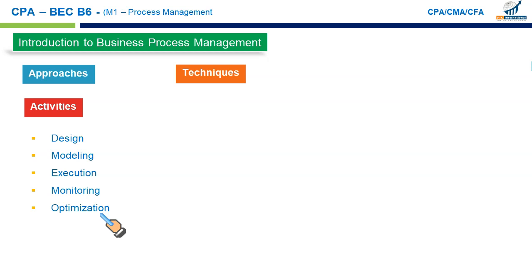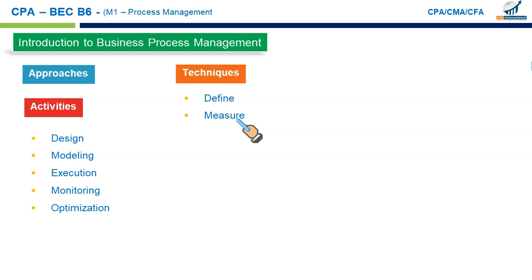The general techniques for process management include: Define — establishing a baseline for the current process functioning; Measure — identifying indicators that show change, such as reduction in throughput time or increased customer satisfaction; and Analyze — using different modeling techniques and simulations to determine the target and optimal improvement expected.